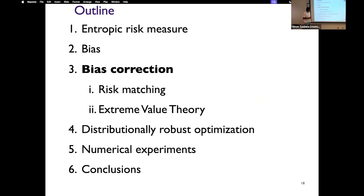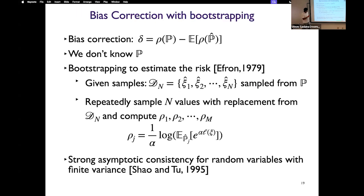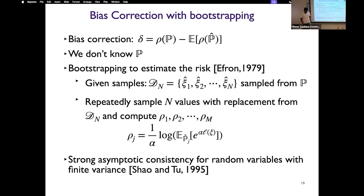I will show you two procedures to do this bias correction. The first is a risk matching-based approach, and the second is an extreme value theory-based approach. The bias is basically rho(p) minus the expectation of rho(p-hat). But we don't know p. In the literature, people do bootstrapping to estimate the bias. You take the samples given to you, repeatedly sample n values with replacement from this dataset, compute the risk, and use this estimate to correct the bias. It is known that you can get strong asymptotic consistency for random variables with finite variance. However, this result is asymptotic, so what we want is bias correction for a finite number of samples.